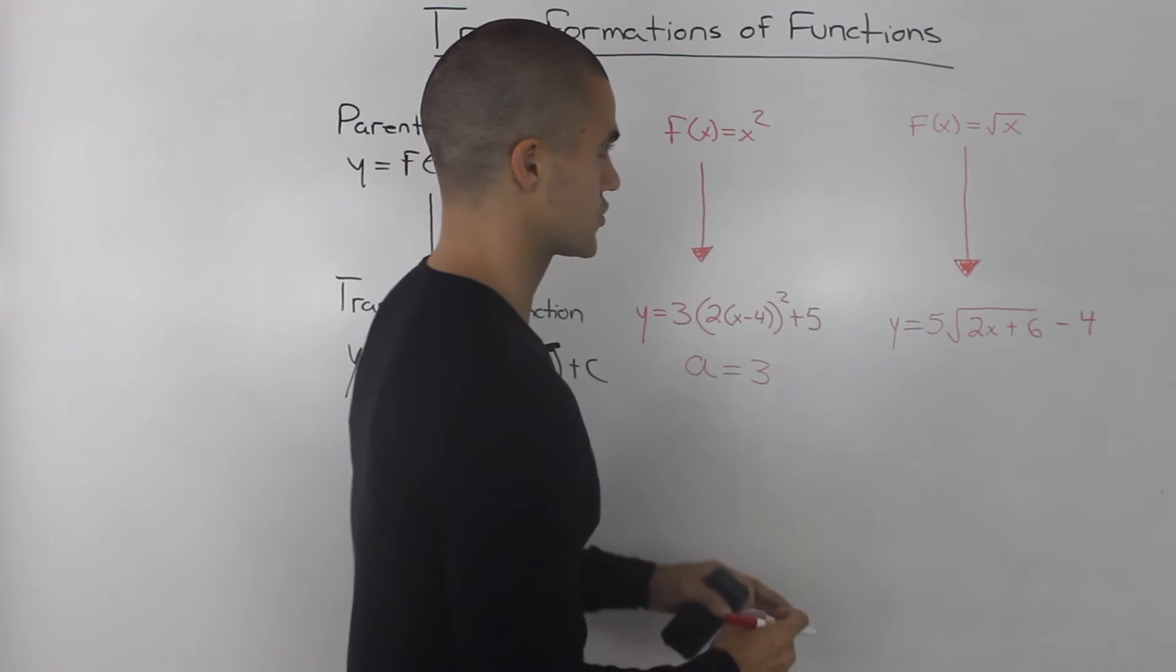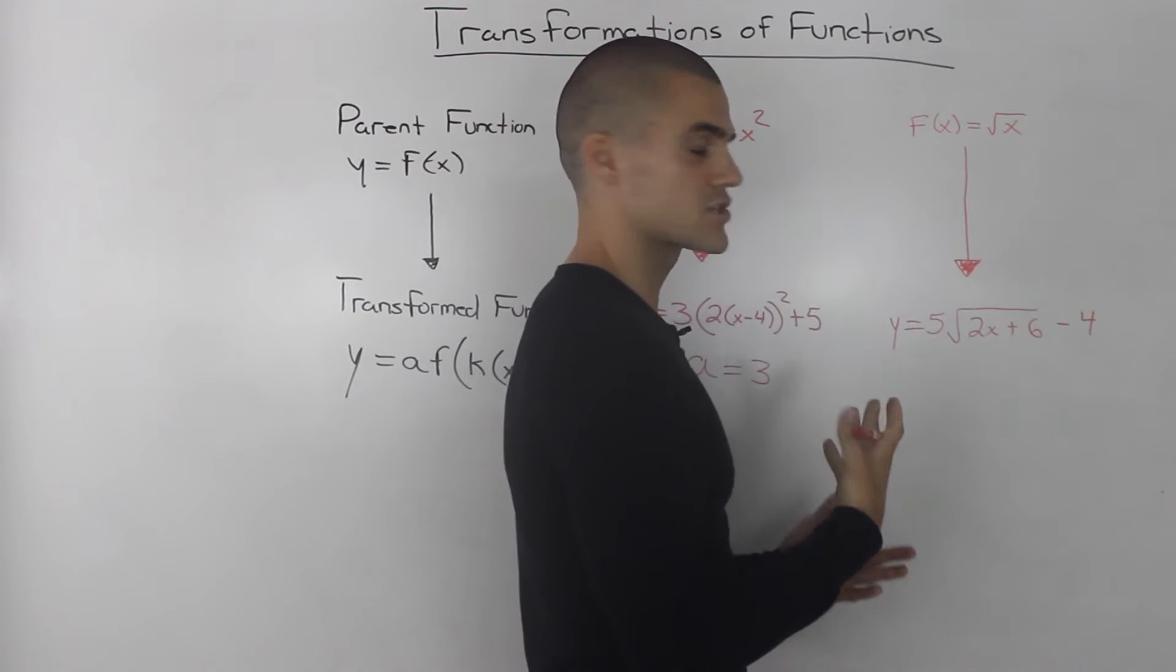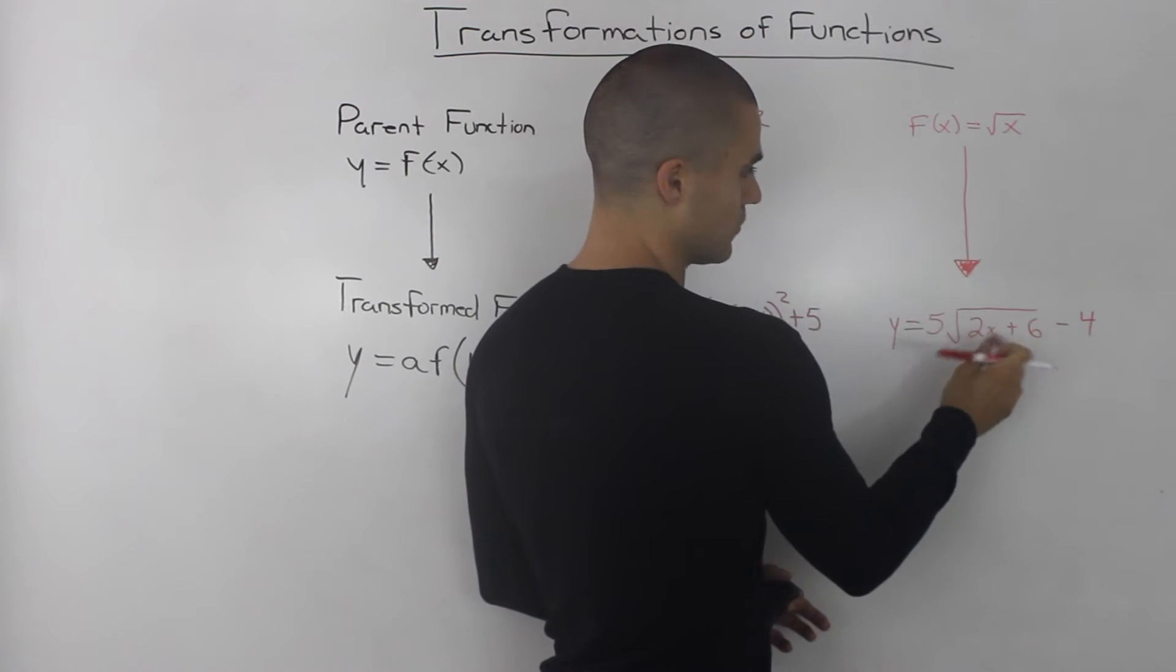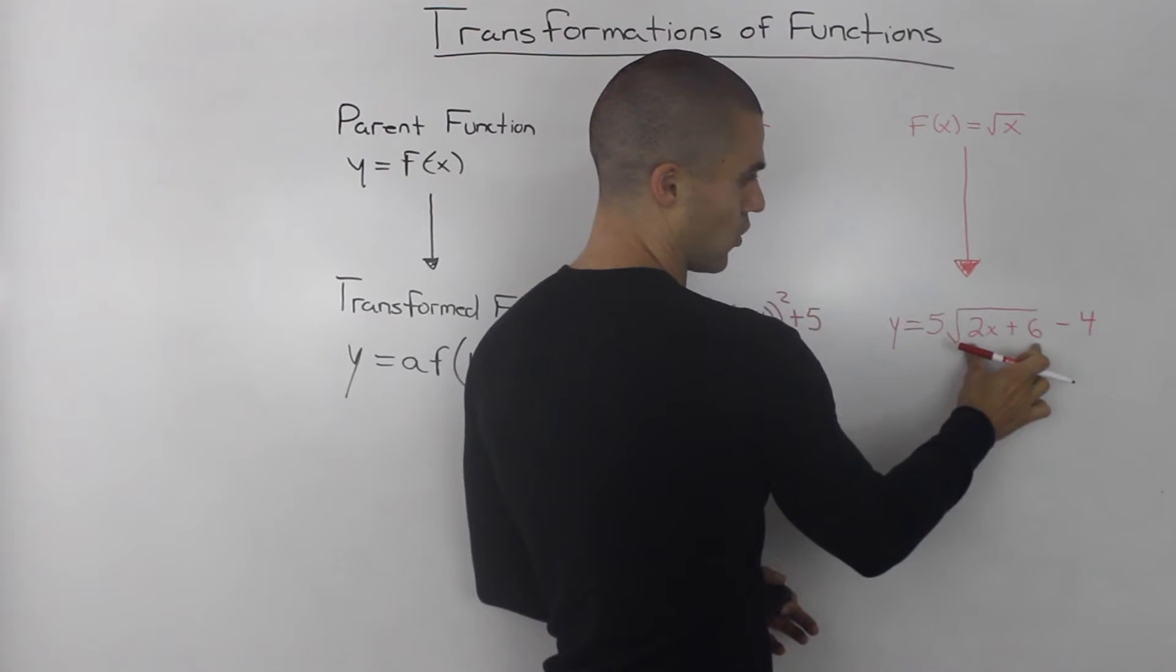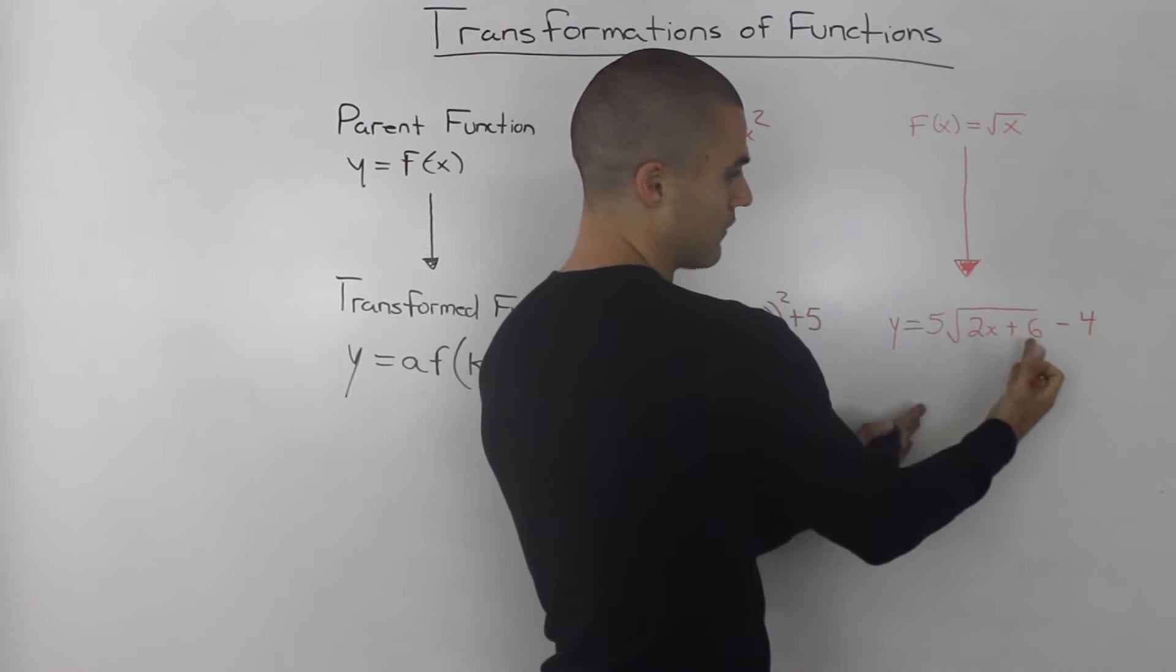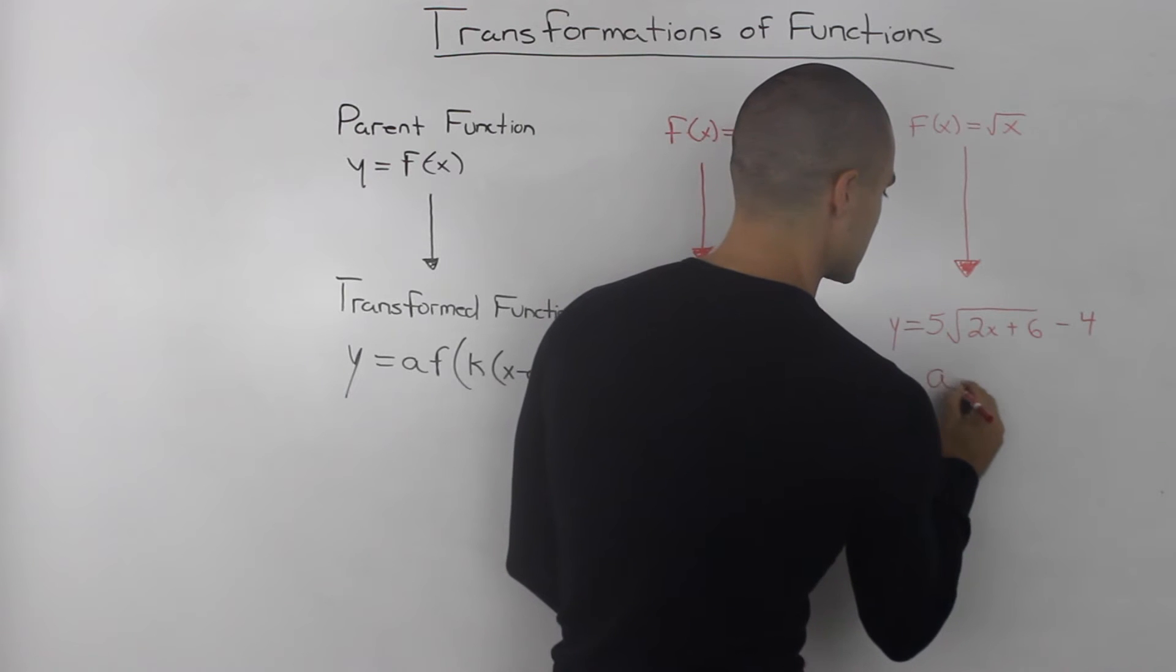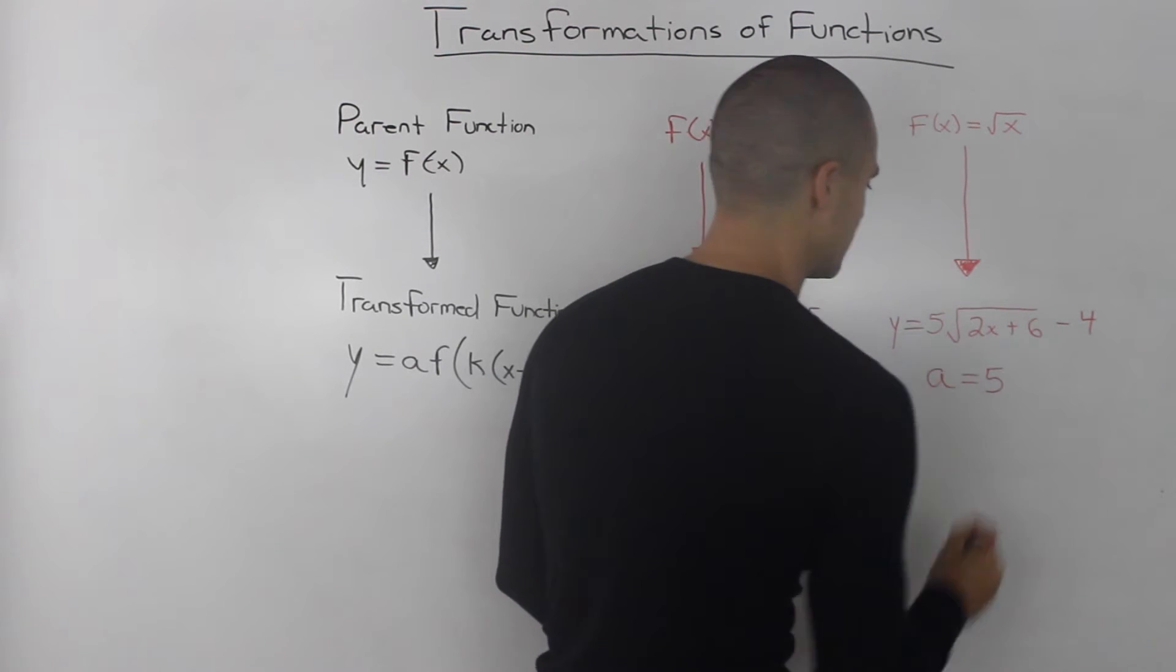Let's go to this function. The parent function is the square root of x. So when we transformed it, we're square rooting this whole new expression here. However, attached to it on the outside is this 5. So the a value in this case is 5.